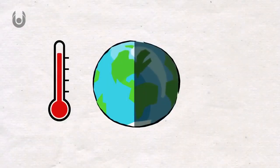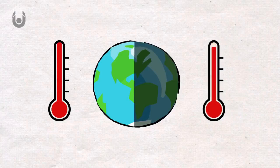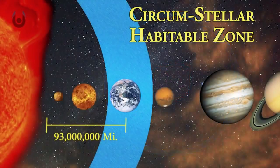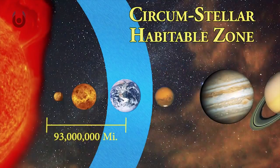Our tidally locked Earth would have half of the planet always facing the Sun, and the other half would be in permanent darkness. Currently, our planet is in what is called a Goldilocks zone, or habitable zone, where it is the perfect distance from our Sun in order to support life.